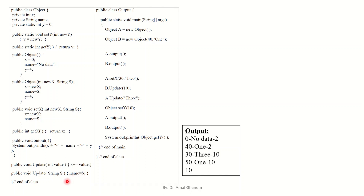So this is the class. We have y as static, and setY and getY as static methods. We have a default constructor and a constructor with parameters. We also have set and get methods. Additionally, we have the overloaded update method — the first one takes an integer, and the second one takes a String.